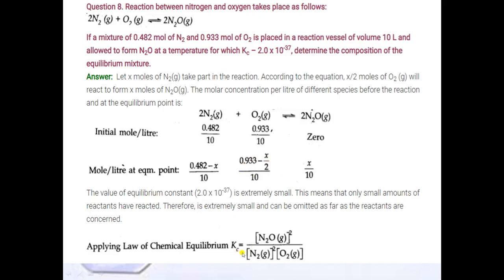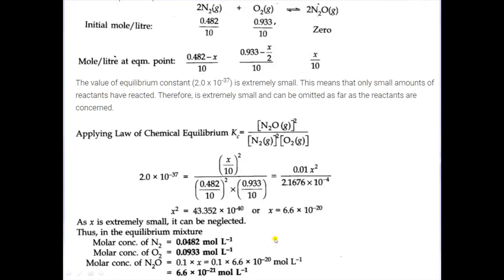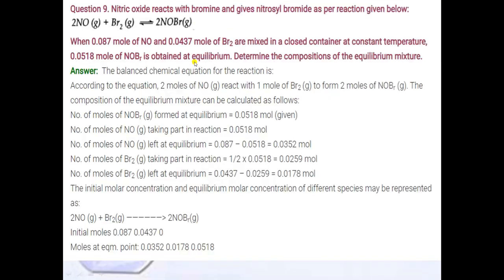Now we write the formula of Kc: concentration of product divided by concentration of reactant, with number of moles as the power. At the equilibrium point, we put these concentration values into the formula and perform the calculation to find the value of X. After finding X, substitute it back to get the equilibrium concentrations of nitrogen, oxygen, and nitrous oxide. This completes question number 8.